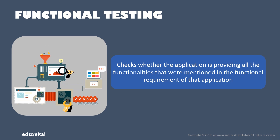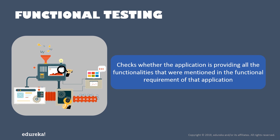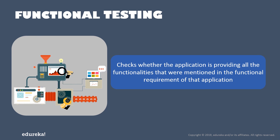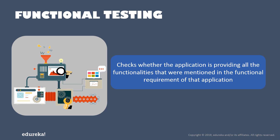Functional testing is also a type of black box testing that holds test cases based on the specifications of the component under test. Black box testing is a method of software testing which examines the functionality of an application without peering into its internal structure or implementation process. The user will not know the internal process that takes place while testing, and this type of testing checks whether the application works as per the customer's need.